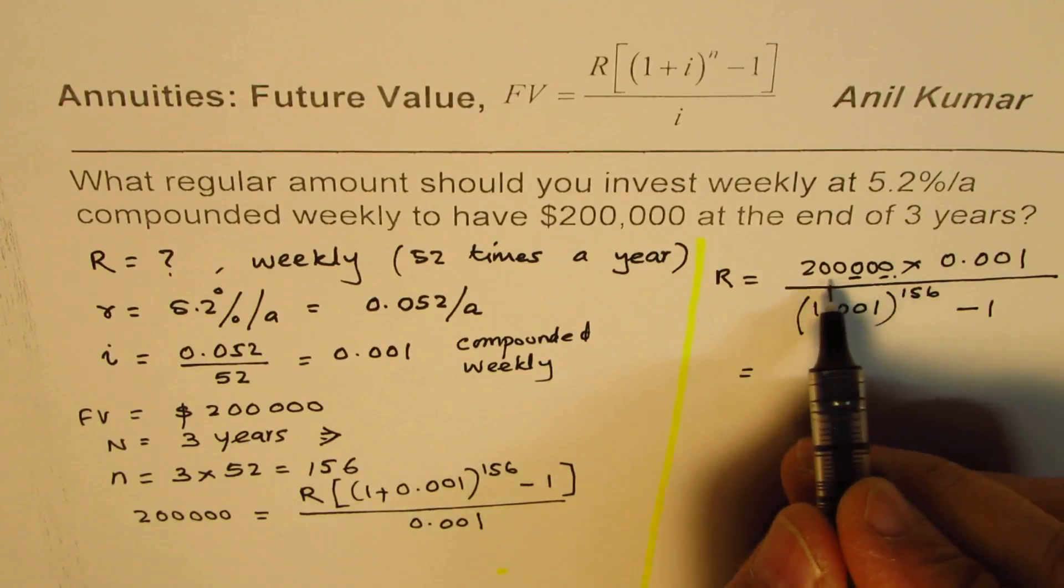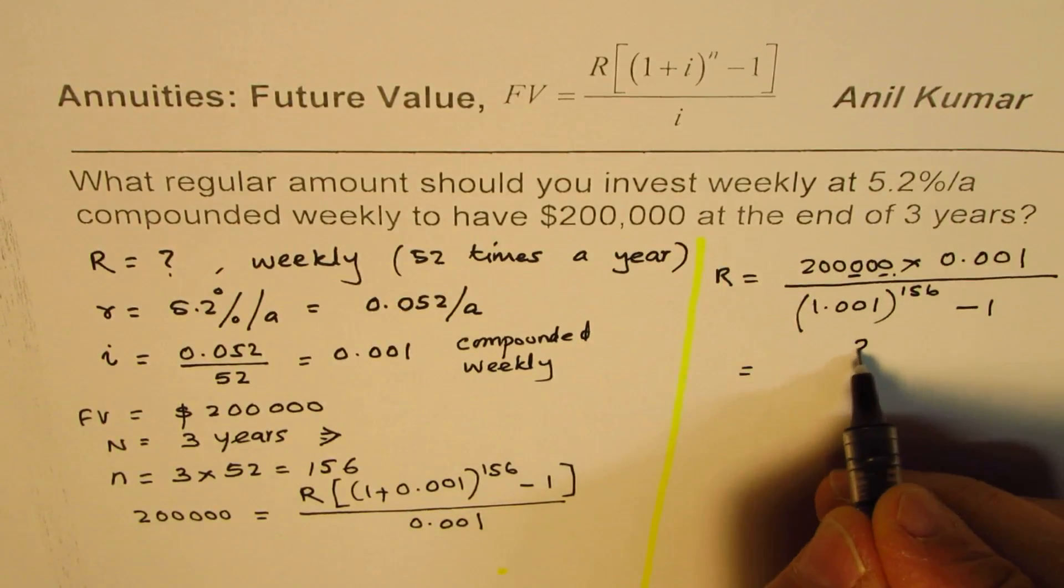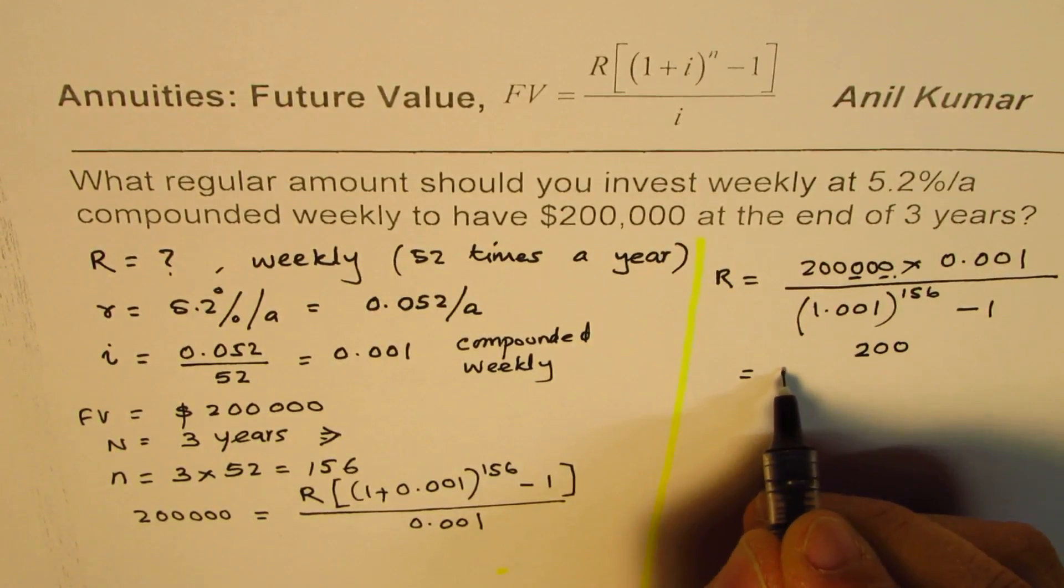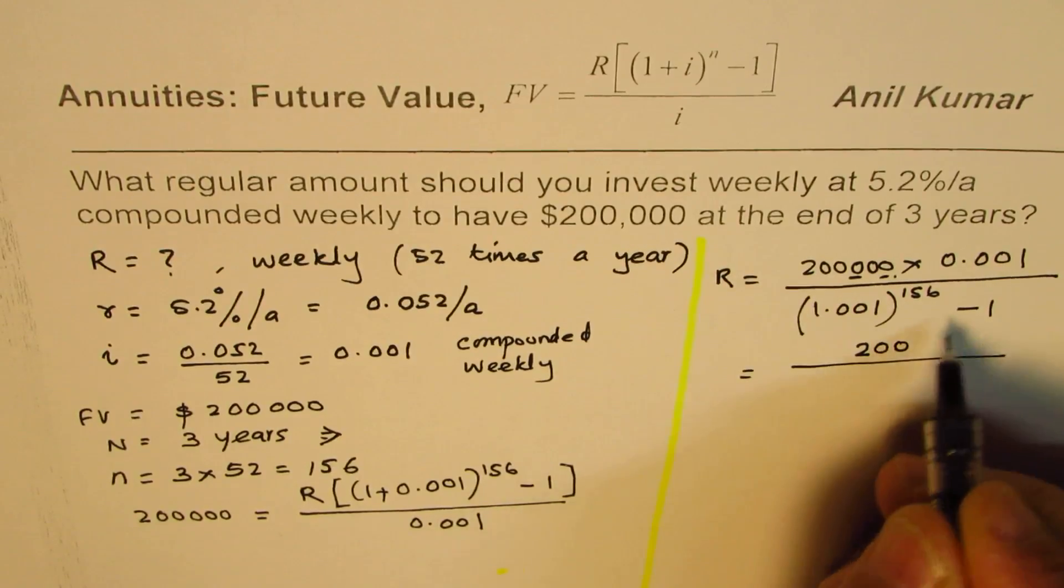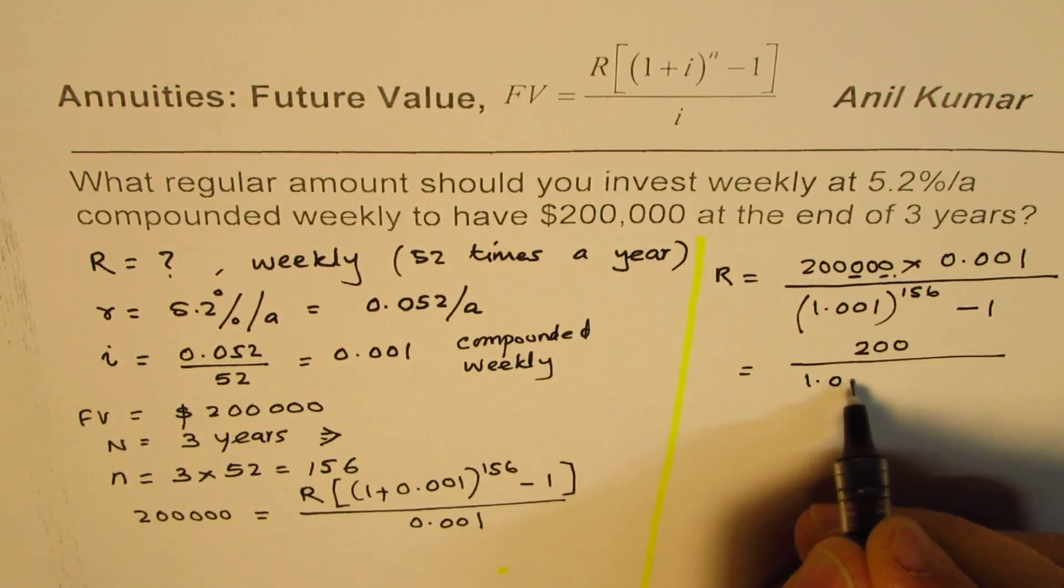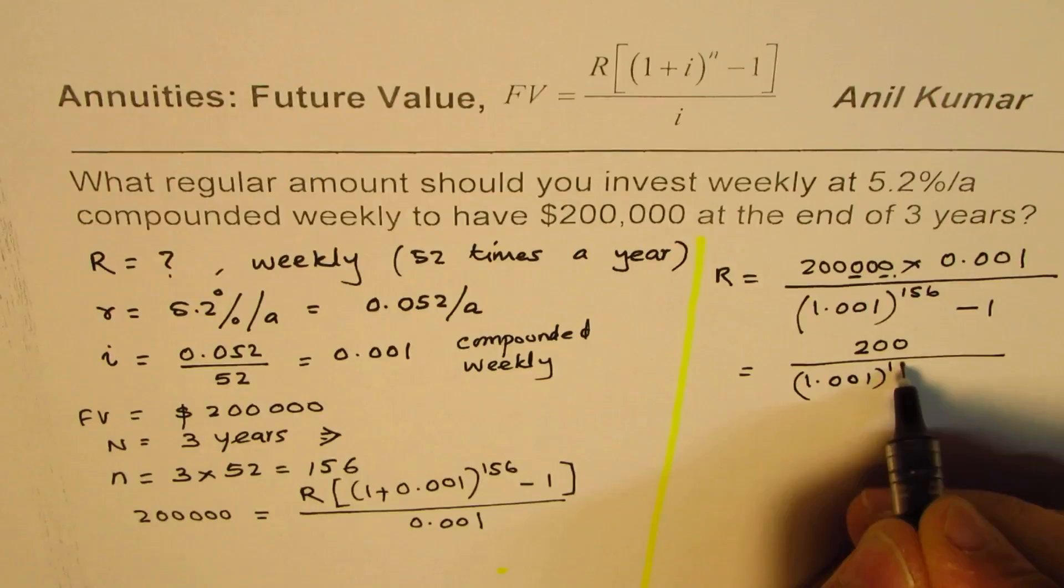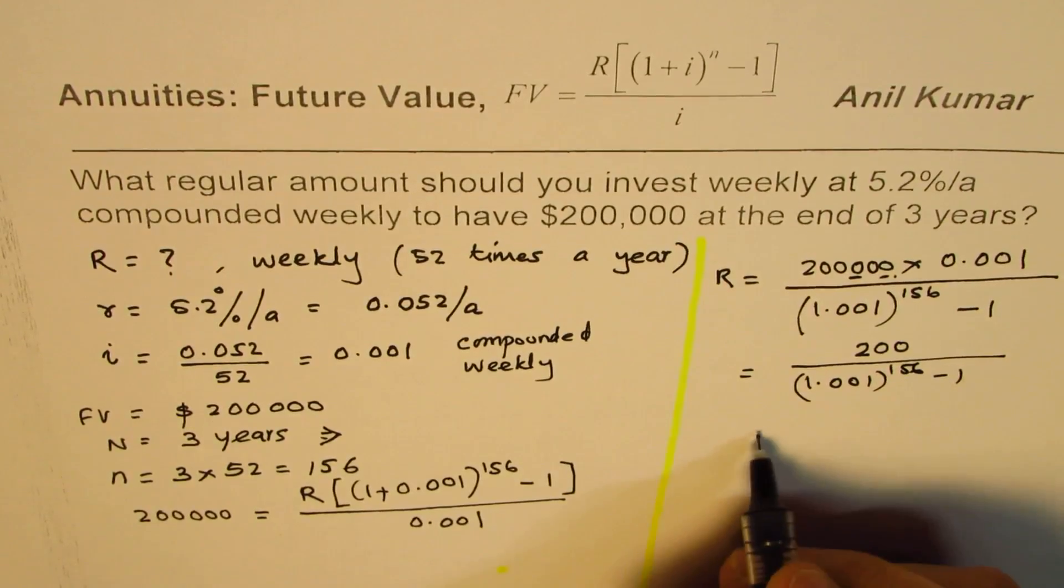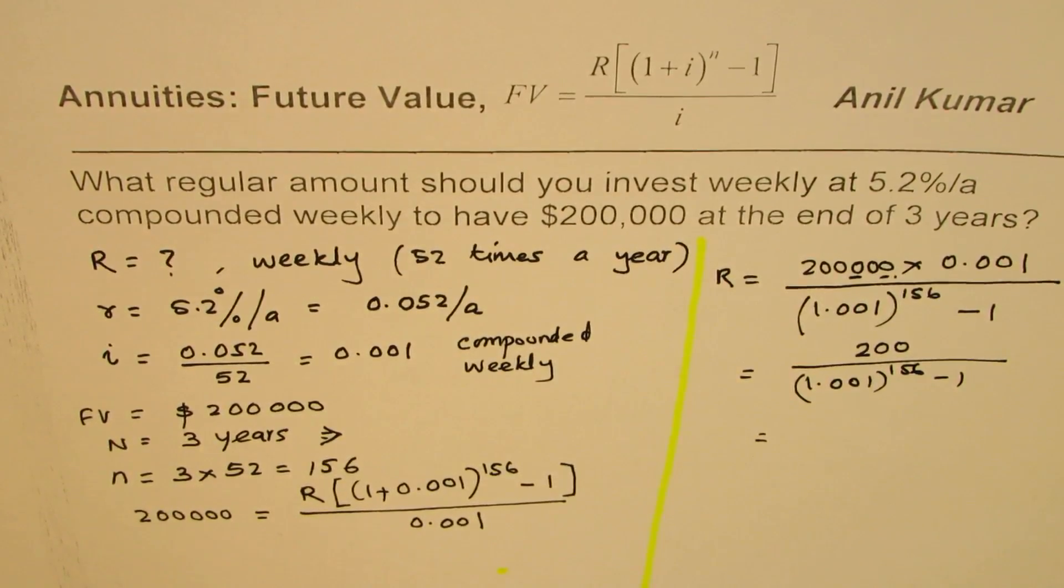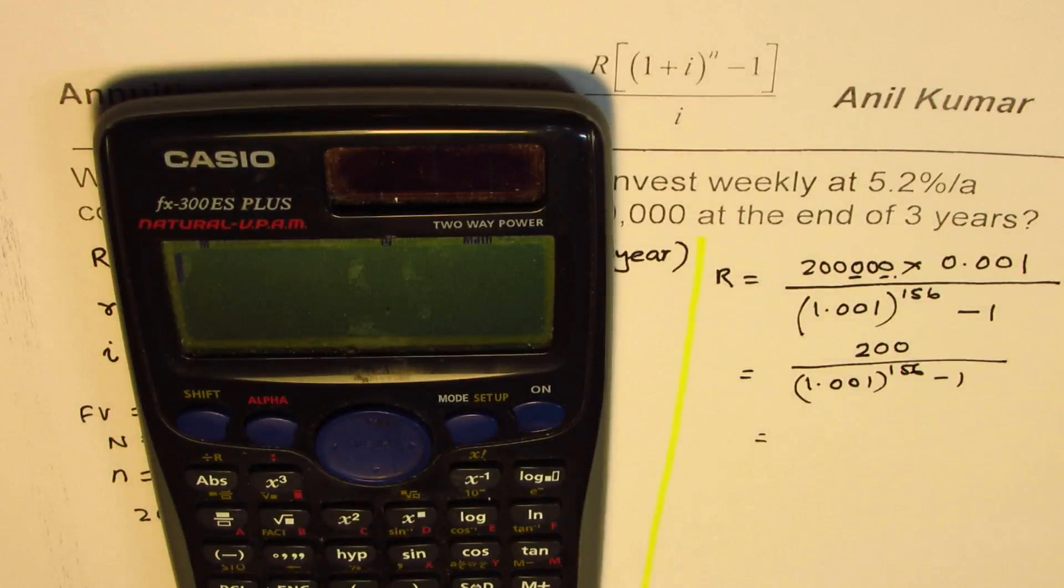So when you do this you get 200. Or just use calculator. Just use calculator. 1.001 to the power of 156 minus 1. Just use calculator. Let's do the calculator.